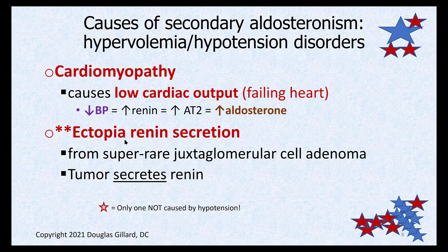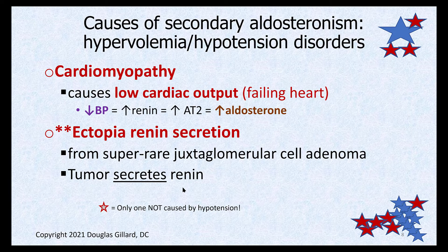There's also a rare cause: an ectopic tumor — not in the zona glomerulosa — that secretes renin. Ectopic renin secretion drives the angiotensin II system and ultimately increases aldosterone. This is the only cause of secondary aldosteronism that isn't primarily from hypotension. It's super rare, but worth knowing.